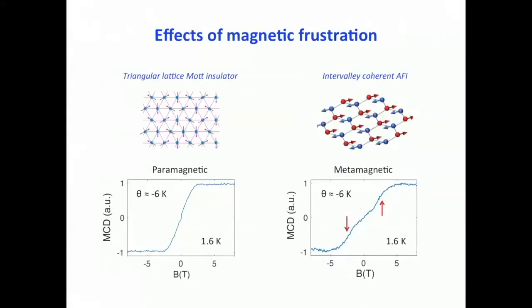The last comparison is between the triangular lattice structure and the honeycomb lattice structure — a nice comparison accessible by tuning the electric field in a single system, to compare the effects of magnetic frustration. Selecting two electric fields — one where holes occupy the triangular lattice and one where they occupy the honeycomb lattice — both with similar Curie-Weiss temperature of about −6 K, and measuring magnetization vs. magnetic field at 1.6 K: the triangular lattice case remains paramagnetic-like, while the honeycomb lattice shows signatures of a metamagnetic transition. This suggests the honeycomb lattice more easily stabilizes long-range magnetic ordering.